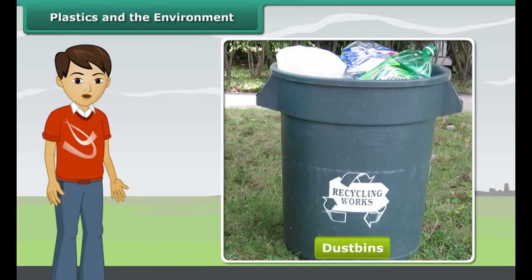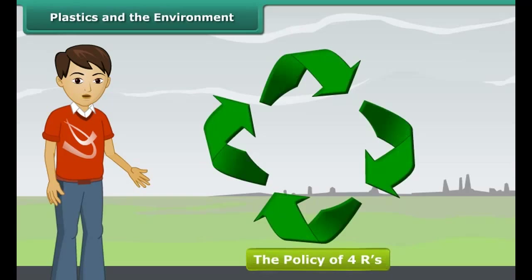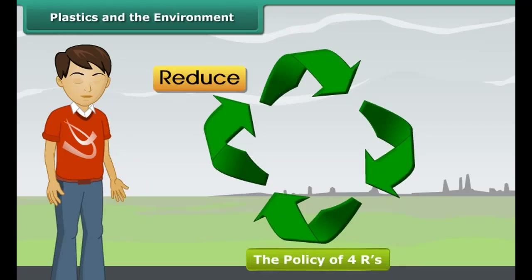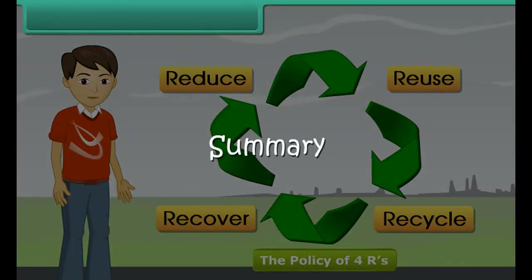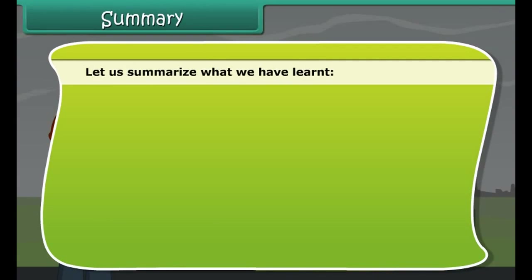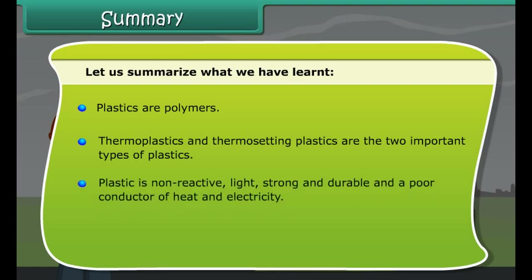There are a number of steps we can take as environmentally conscious citizens to safeguard our environment from the growing menace of plastics. We can replace plastic shopping bags with jute bags or handmade paper bags. Instead of littering, particularly on roads, we should put plastic objects in dustbins marked as non-biodegradable, segregating them from biodegradable wastes. Sell plastic scraps to the scrap dealer for recycling. Adopt the policy of the 4 R's: reduce, reuse, recycle and recover.